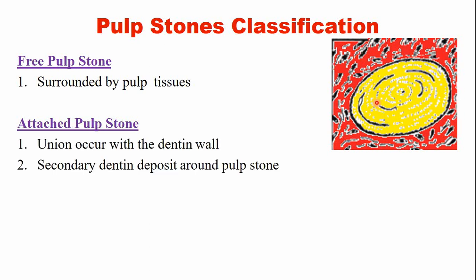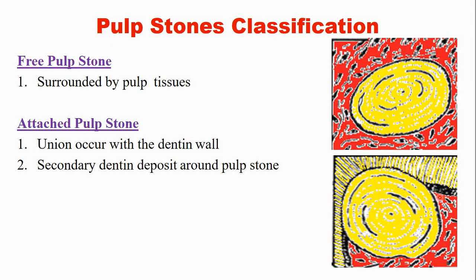What is an attached pulp stone? Attached pulp stones form a union with the dentine wall. Initially, attached pulp stones may be free pulp stones, but they become embedded because of secondary dentine deposition, and they later become attached pulp stones. In this picture, you can see a pulp stone attached to the dentine. Sometimes this attached pulp stone becomes completely embedded within the dentine, in which case it is referred to as an embedded pulp stone.